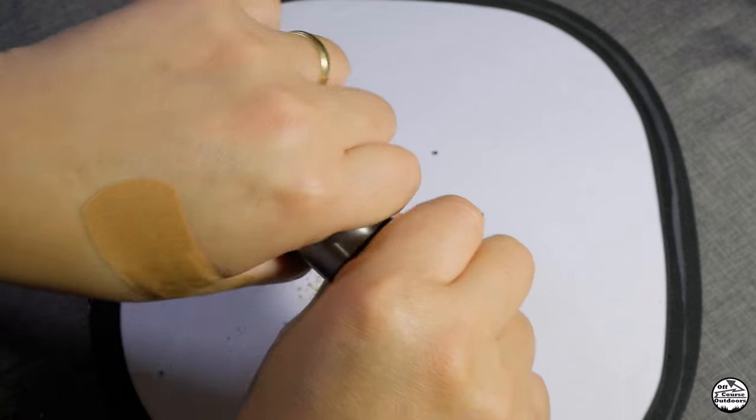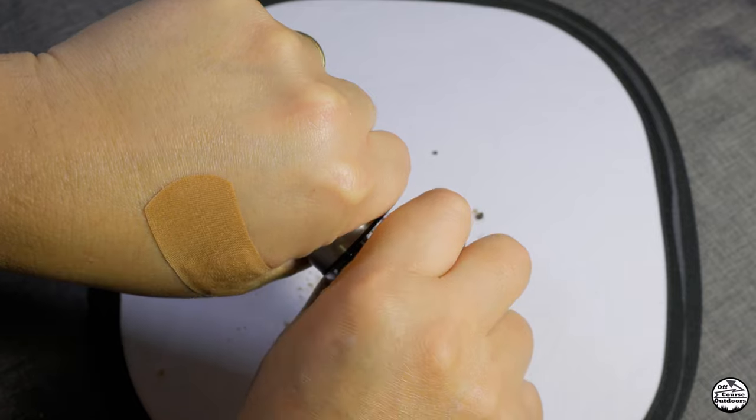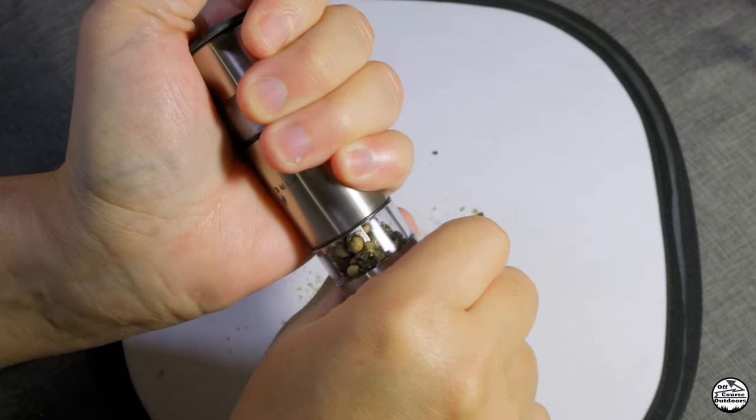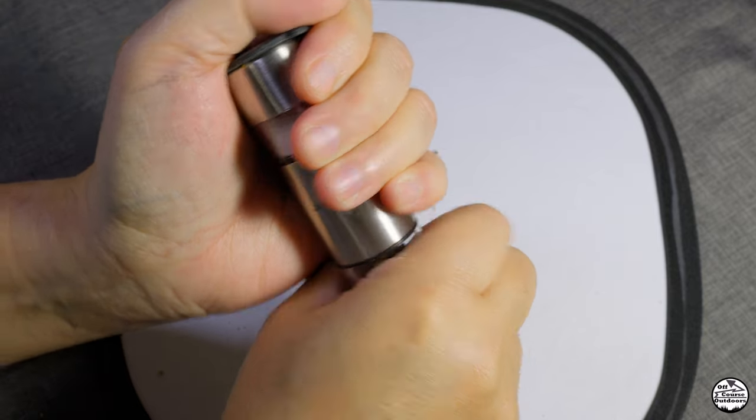Definitely try not to death grip the other half. I did that and the other compartment popped off. You'll need to try to squeeze only the center stainless steel section.